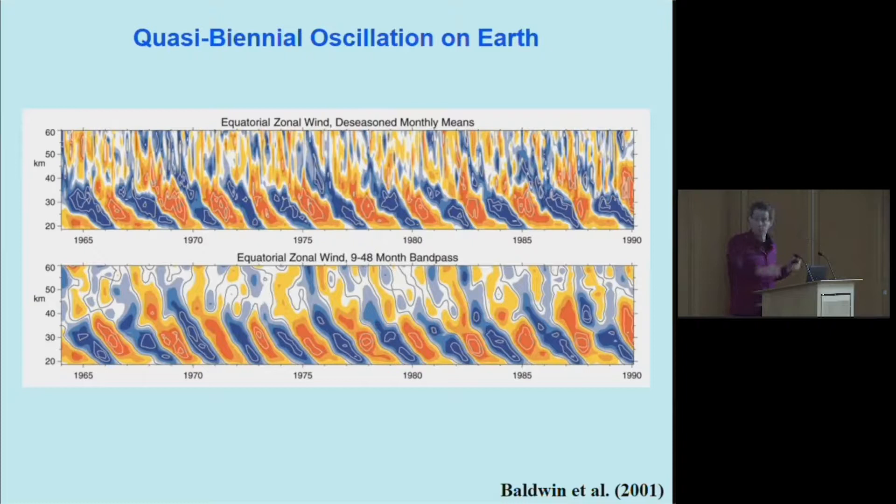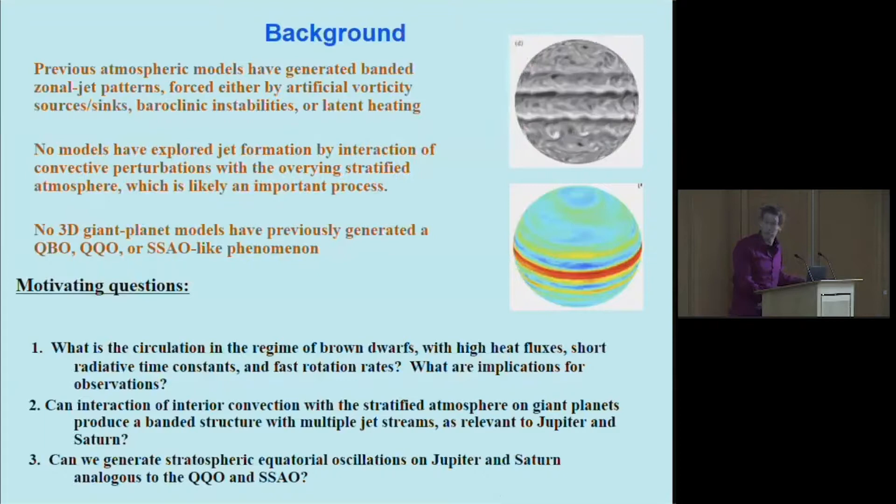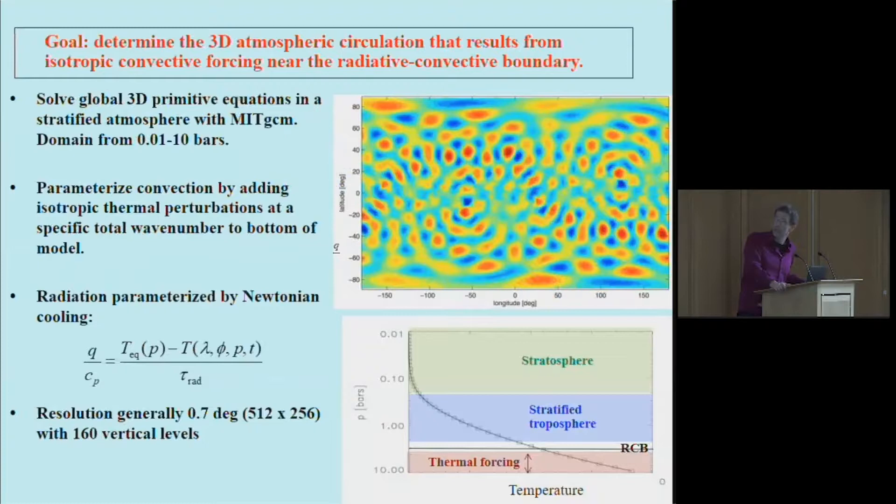We have this interesting oscillation. For giant planets there's never been a three-dimensional model that's captured this, so I'm interested in globally considering these phenomena together—the zonal jets and these stratospheric oscillations. I'm doing three-dimensional atmospheric calculations using the primitive equations, which are the standard equations for a stratified atmosphere. We're not trying to represent the deep convection zone, but we kind of go through the atmosphere down to the top part of the convection zone, and we parameterize the effect of convection by adding random perturbations at the base of the model.